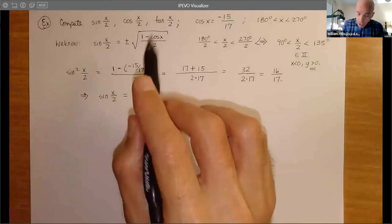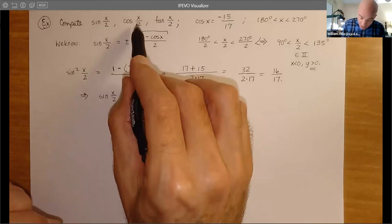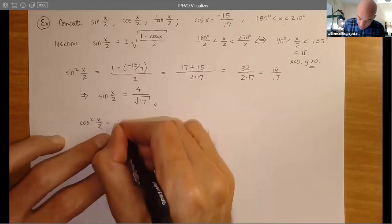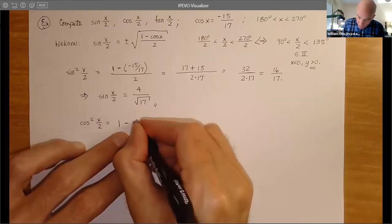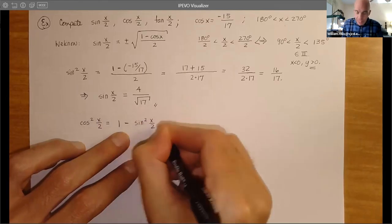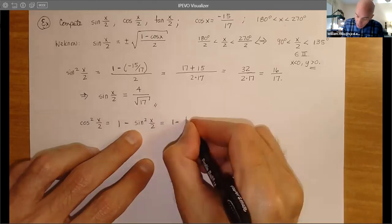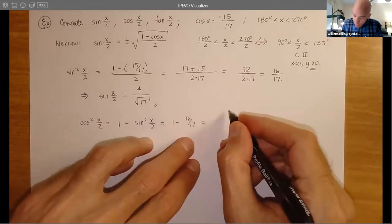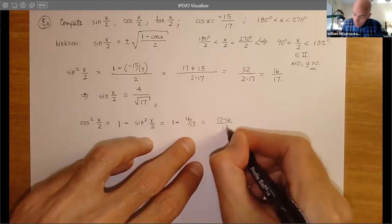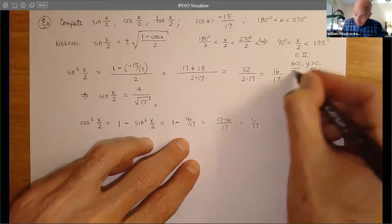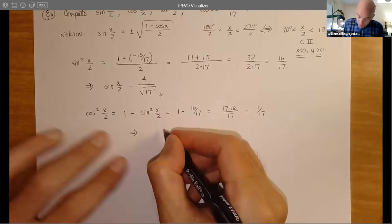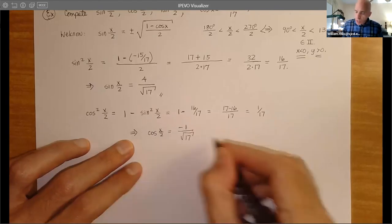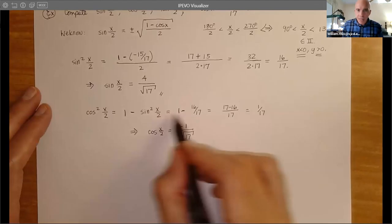Now, if we look here, cosine(x/2) — let's just use the standard Pythagorean identity. Cosine²(x/2) = 1 - sine²(x/2). Well, sine² is just 16/17. So this is 1 - 16/17. Once we have that square, we can use it again and then square-root things. That'll be 17 - 16, which is 1/17. But now notice x is negative in the second quadrant, so this implies we take the negative square root. So cosine(x/2) = -1/√17.